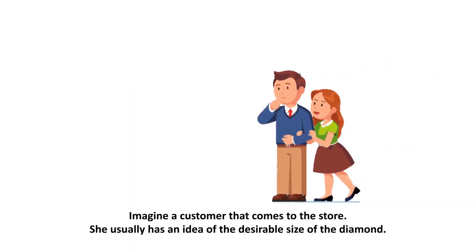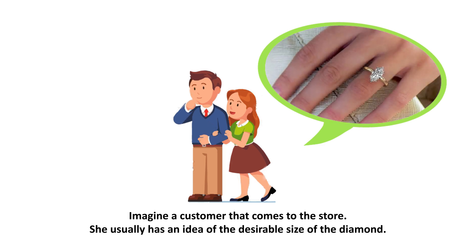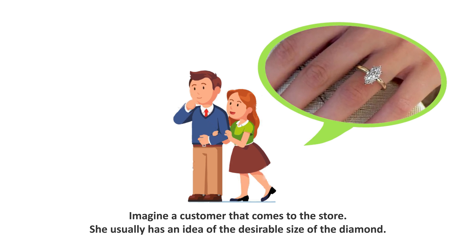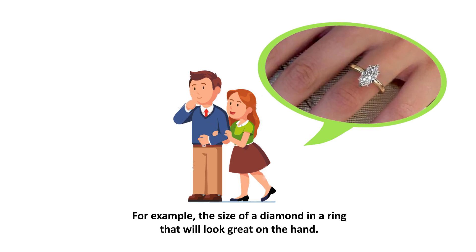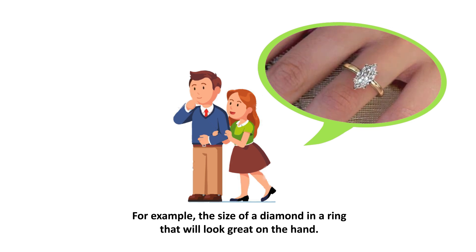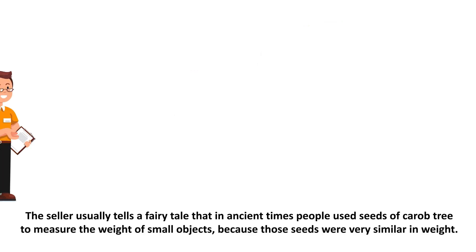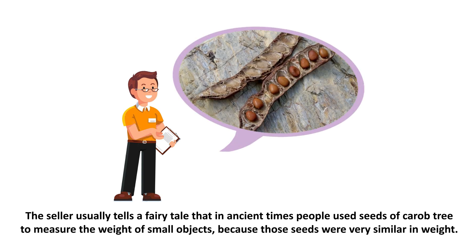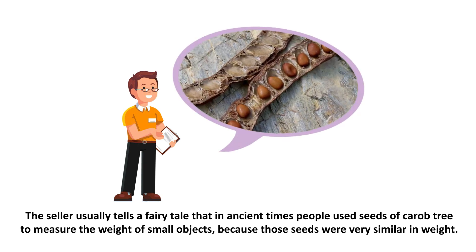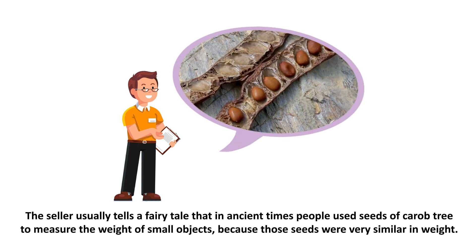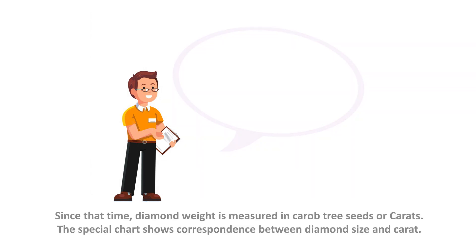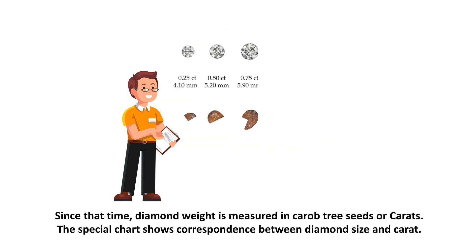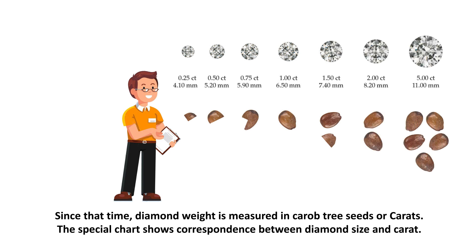Imagine a customer that comes to the store. She usually has an idea of the desirable size of the diamond — for example, the size of a diamond in a ring that will look great on the hand. The seller usually tells a fairy tale: that in ancient times people used seeds of the carob tree to measure the weight of small objects, because those seeds were very similar in weight. Since that time, diamond weight is measured in carob tree seeds, or carats. A special chart shows the correspondence between diamond size and carat.